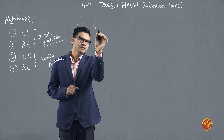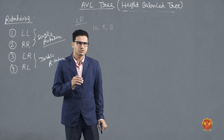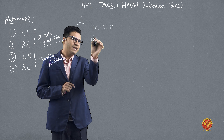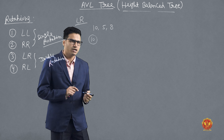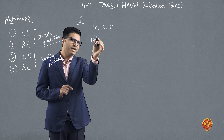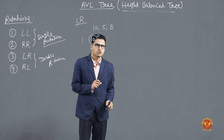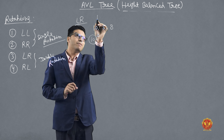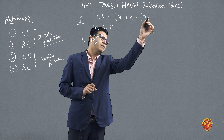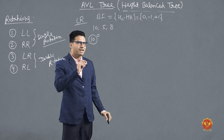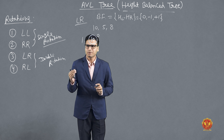We will take an example: 10, 5 and 8. I have to insert these elements in an AVL tree — that means a balanced binary search tree or height balanced tree. Now 10 is the first element, the root node. The balancing factor is height of left subtree minus height of right subtree, which is 0 minus 0 equals 0. The balancing factor must be 0, minus 1, or plus 1 for the tree to be balanced; otherwise it is unbalanced and we apply a rotation.